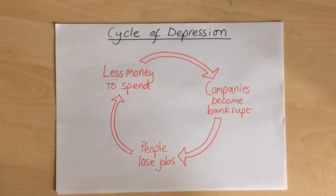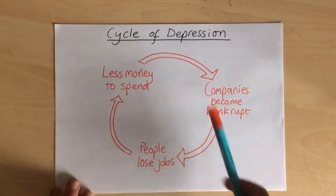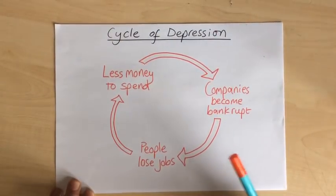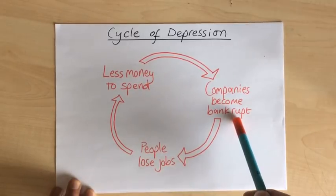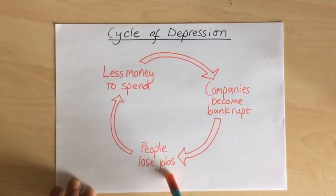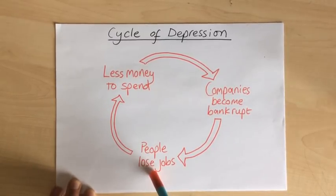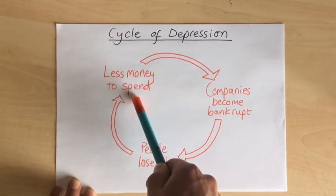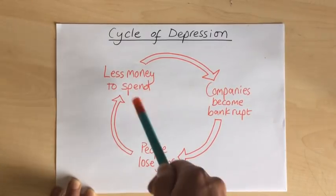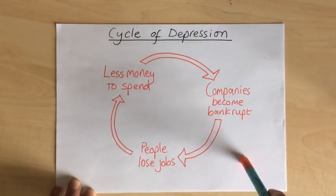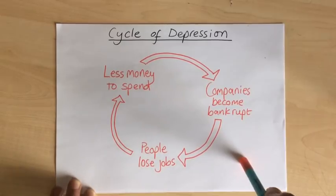One way to think about all these causes linking together is this cycle of depression. Due to all the problems we've talked about, companies start to go bankrupt — they start to lose money and not sell as much, which means they do not need as many people to work in their factories, so people lose their jobs. Those people then have less money in their pockets to spend, so they are buying even less American products from American factories, which means more companies go bankrupt, so more people lose their jobs and have less money to spend. That's why the Wall Street Crash quickly goes from a problem for some companies to a panic in the entire American economy.